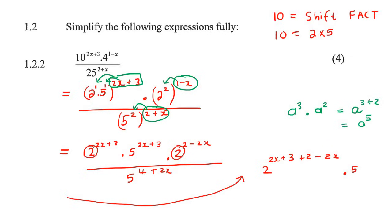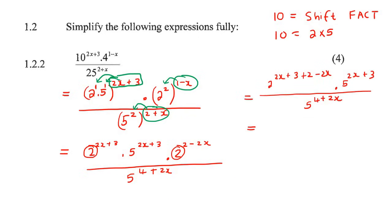Let me just move this up a bit. So it's going to be 2 to the power of 2x plus 3 plus 2 minus 2x. And then we'll be left with the 5, which is still there. And then at the bottom, we're going to have 5 to the 4 plus 2x.